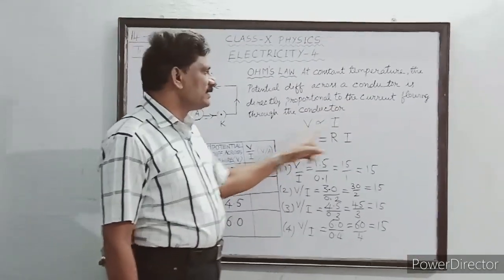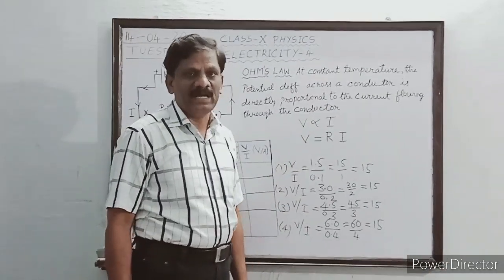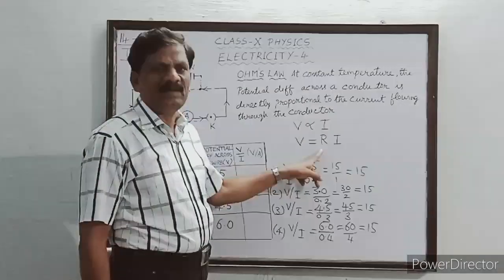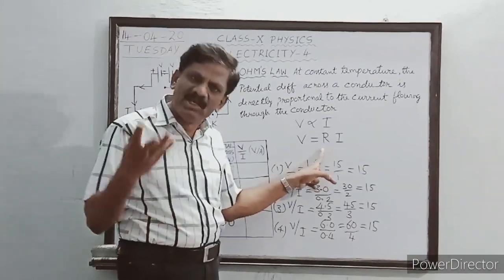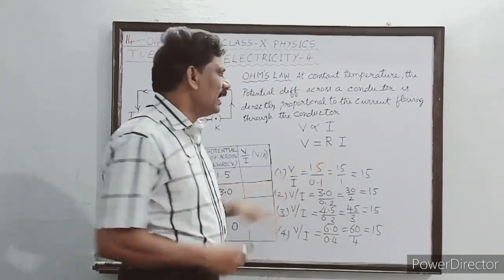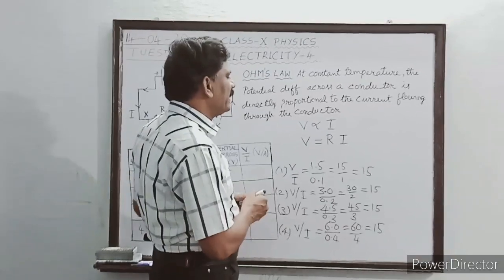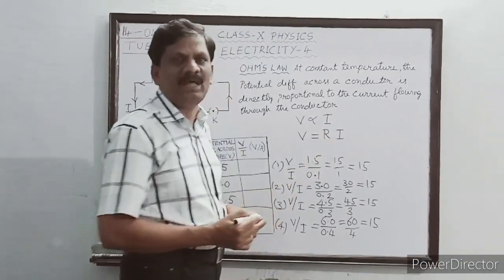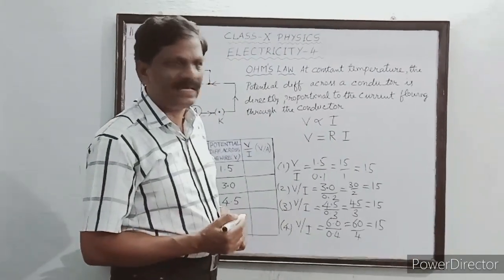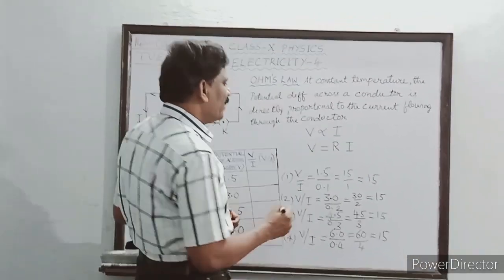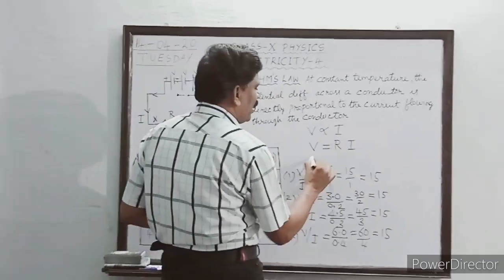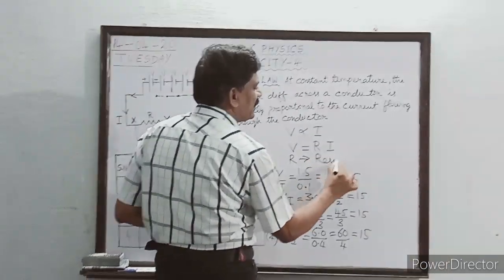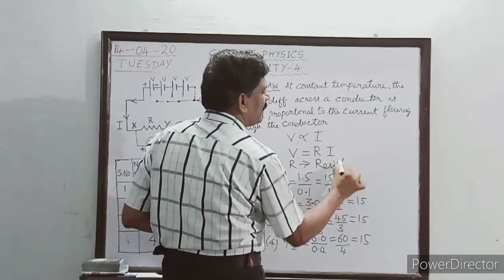That means V is directly proportional to I, and V is equal to some proportionality constant R multiplied by I, where R is called the electrical resistance of the conductor.